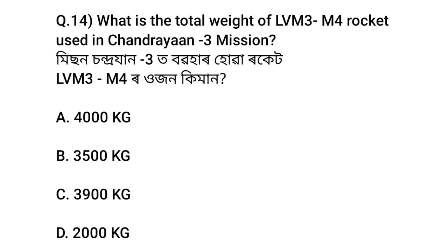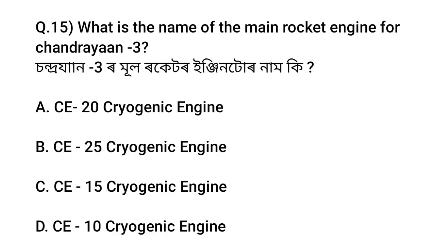Next question: What is the total weight of the LVM3M4 rocket used in the Chandrayaan 3 mission? Option no. C: 3900 kg. Next question: What is the name of the main rocket engine for Chandrayaan 3? Option no. 8: CE-20 Cryogenic engine.